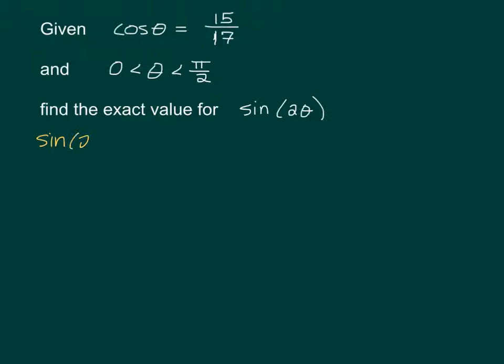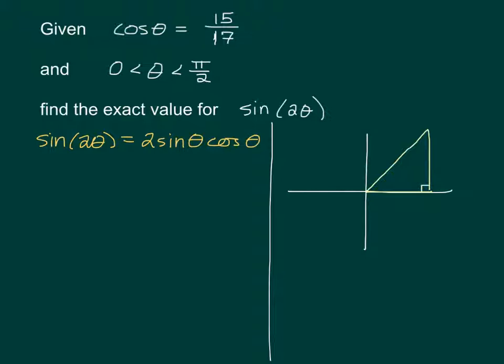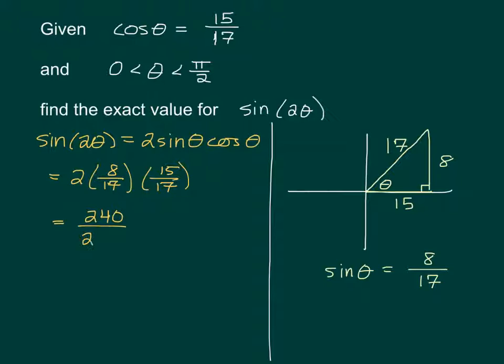They are asking for sine again, so sine 2θ is 2 sine θ cosine θ. We were told cosine, we need to figure out sine again. We know that we are in the first quadrant. Here is θ. This is 15. This is 17. The missing length is 8, so we know sine θ is 8 over 17, positive because we are in the first quadrant. So, sine 2θ is 2 times 8 seventeenths times 15 seventeenths, which is 240 over 289.